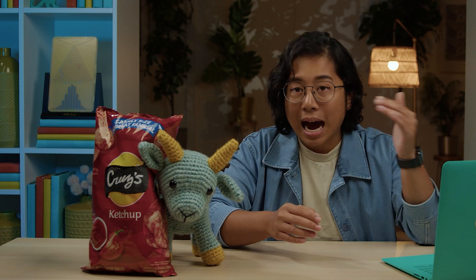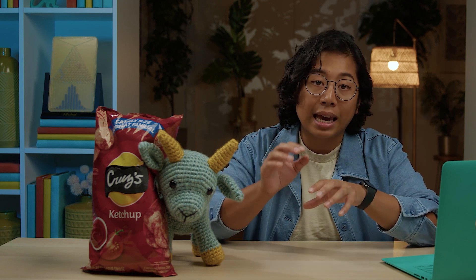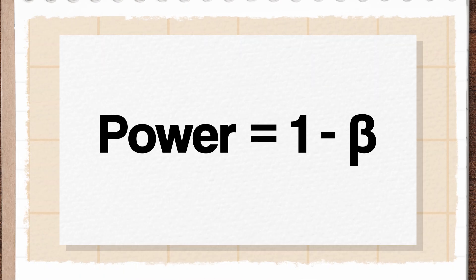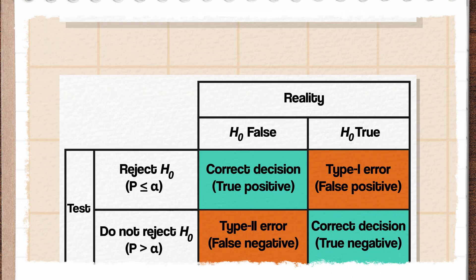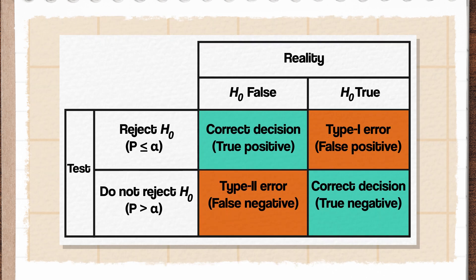We want power to be high because we want to do the right thing. Power is also related to our probability of making a type 2 error, beta. Power is equal to 1 minus beta, so if power goes up, beta goes down, which means there's less chance of getting a false negative. The power of a study is related to the sample size, which is an element we have some control over. Having access to more data can help increase the power of a study and decrease the probability of a type 2 error. The more information we have in a sample, the more precise our estimates are, and that helps us feel more secure in our decisions.